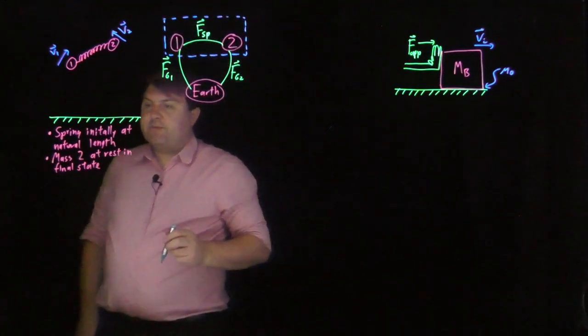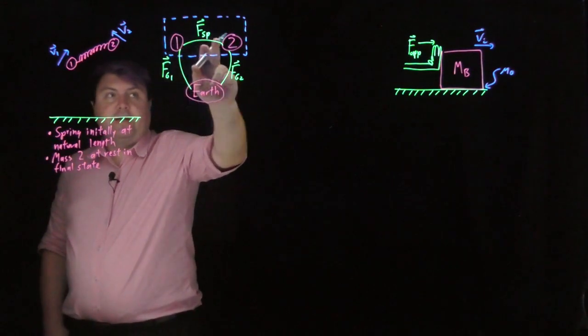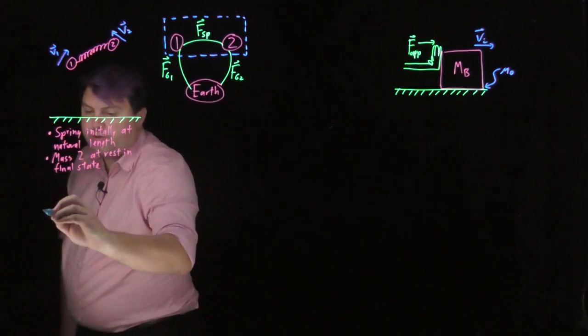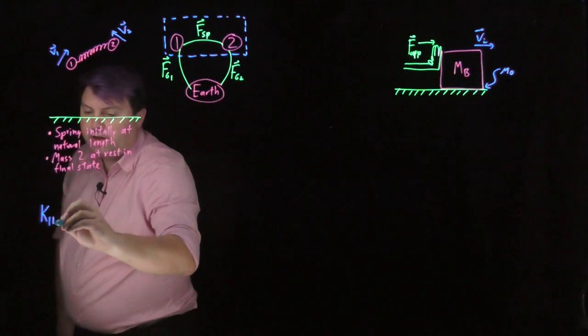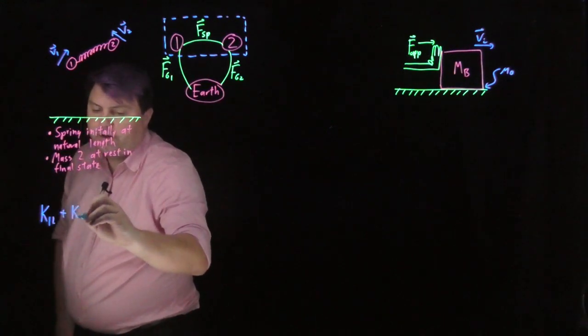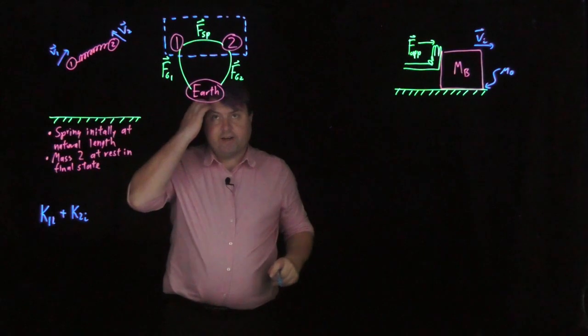Once we've done this, this means that we need to be tracking the kinetic energy of both one and two. So, we're going to start by saying K1i plus K2i. So, these are both of our kinetic energies.